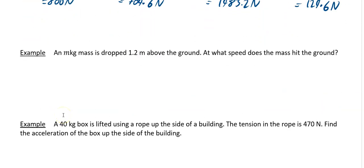Next example says an m kilogram mass is dropped 1.2 meters above the ground. At what speed does the mass hit the ground? So in this one, this confuses people the question I guess, but really the mass is irrelevant. The mass is irrelevant. So here your a is just equal to 10 meters per second squared downwards.